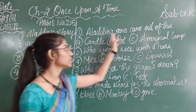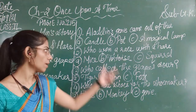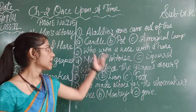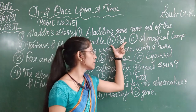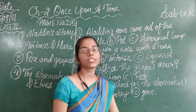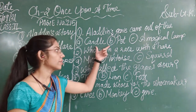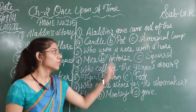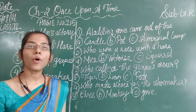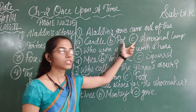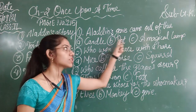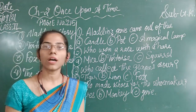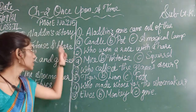The first question is: 'Aladdin's genie came out of this.' The three options given are: first, candle; second, pod; and third, a magical lamp. To select the correct option, you have to know about the story. So let's recall the first story about Aladdin.